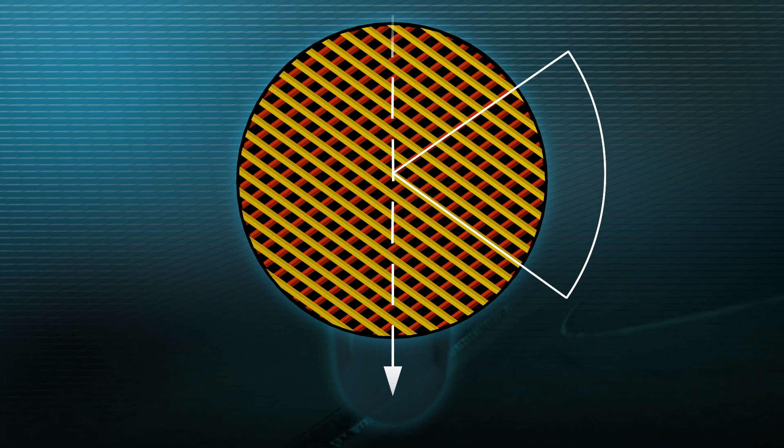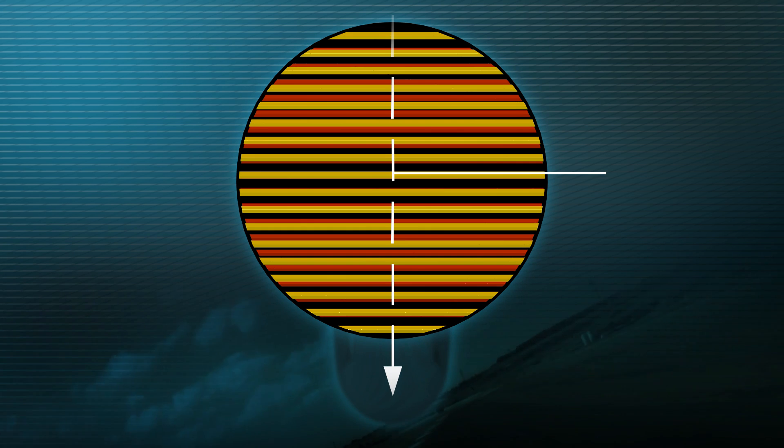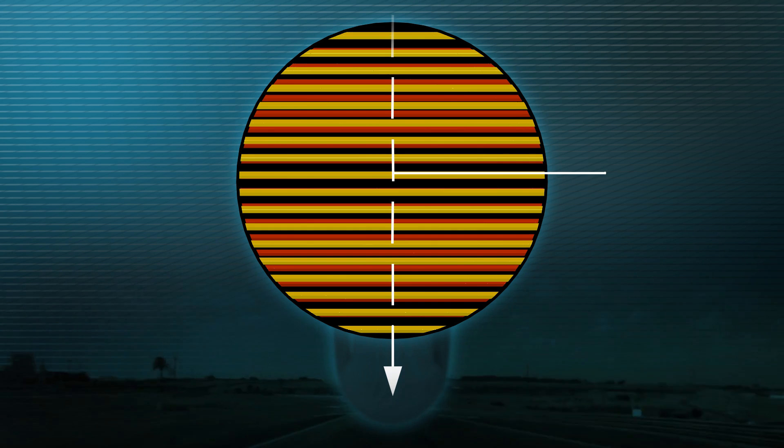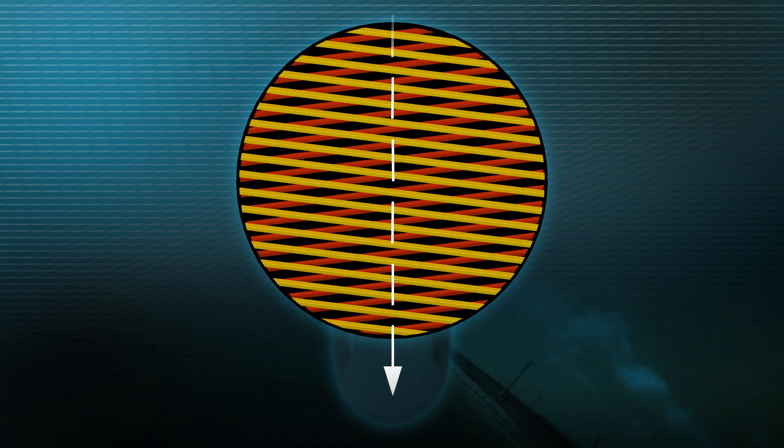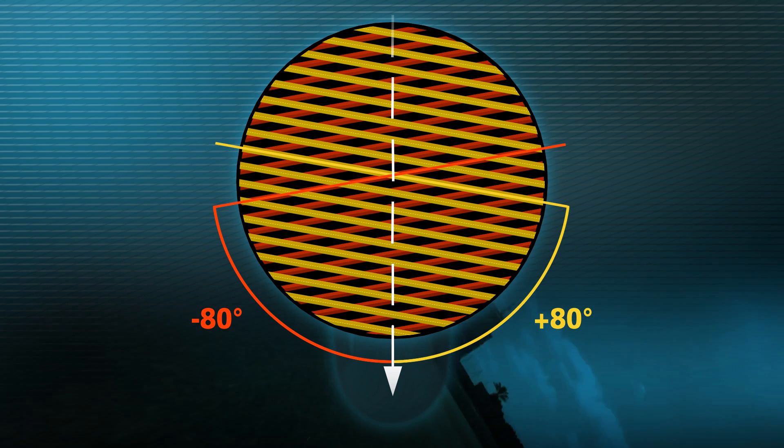To take an extreme example, the casing would not be very rigid if the two plies were laid parallel to each other. In the case of a conventional radial motorcycle tyre, the plies are crossed in relation to each other, although the angles at which they are laid can be identical. For example, minus 80 degrees and plus 80 degrees.